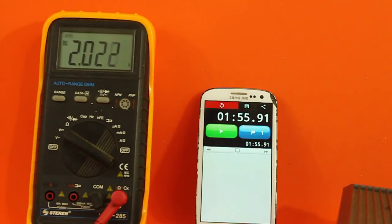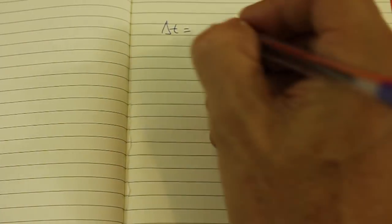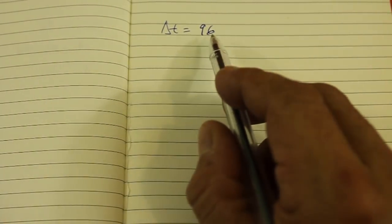So we get a time of 1 minute and 56 seconds. Our time was of 1 minute and 56 seconds or 96 seconds. So that means that the capacitance is of 96 farads.